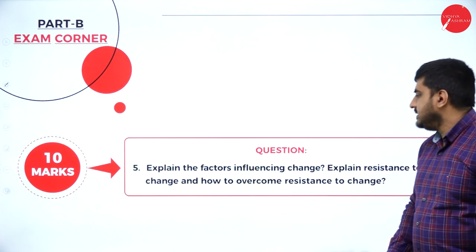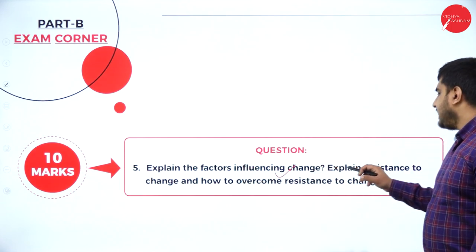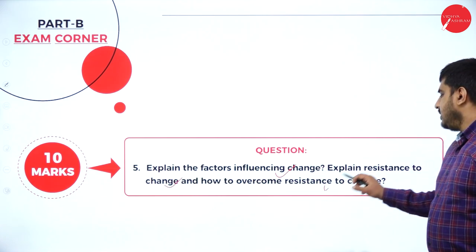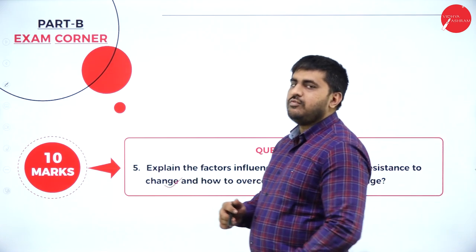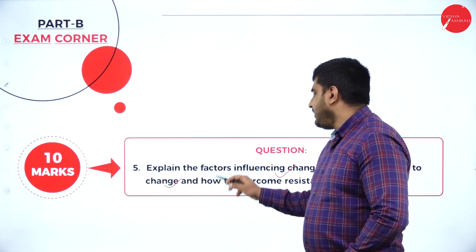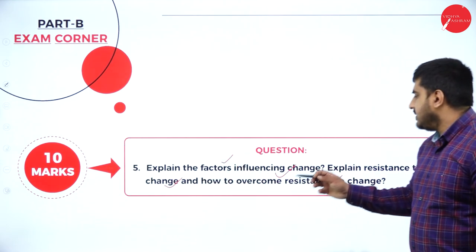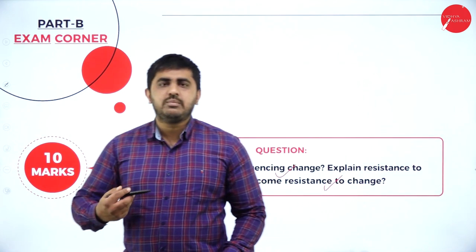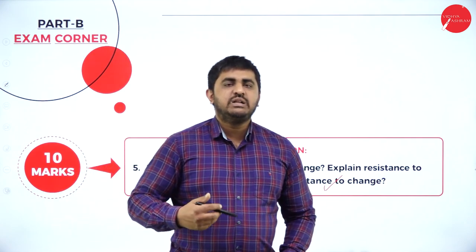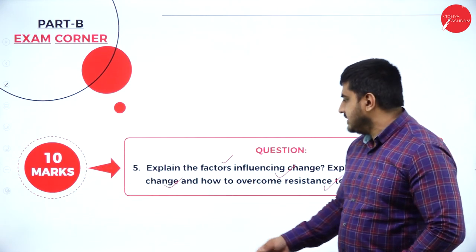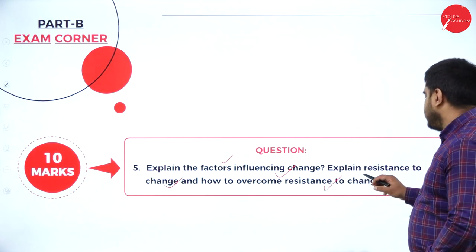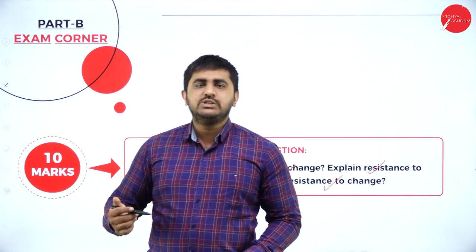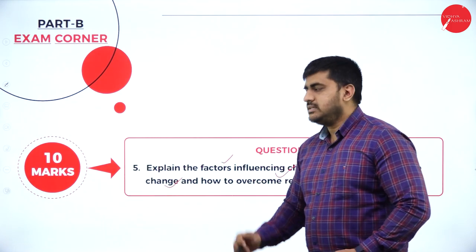Next question: explain the factors influencing change, the resistance to change, and how to overcome resistance to change. First give the meaning of planned change, then explain the different factors involved in change. When management plans to bring a change in the organization, there will be resistance to change — explain how to overcome it. Everything is specified in the notes, so refer to the notes and write.